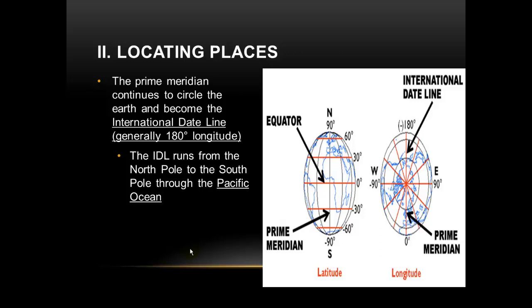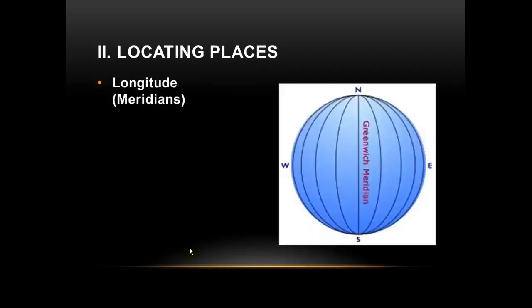The prime meridian circles the entire Earth — it goes from the North Pole to the South Pole in one big circle. After it comes across the Earth on the South Pole side, it changes its degrees from zero degrees to 180 degrees and becomes the international date line. So on one side of the Earth it is called the prime meridian, and on the other side it is called the international date line.